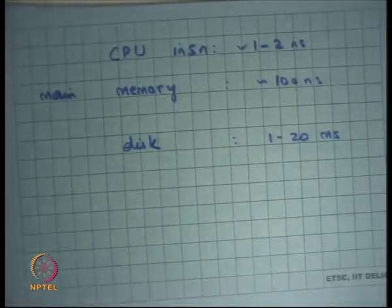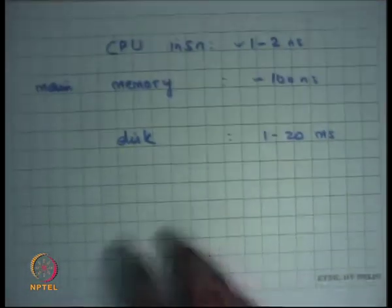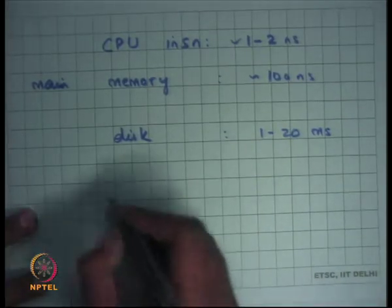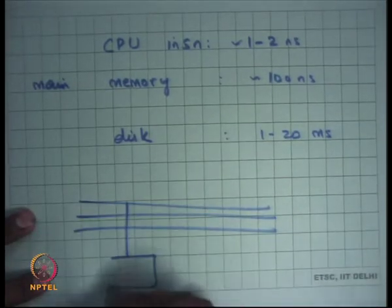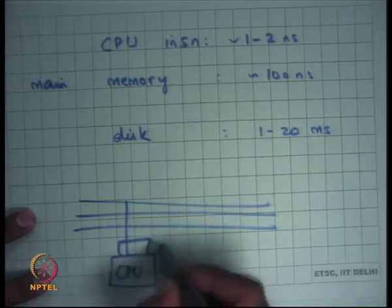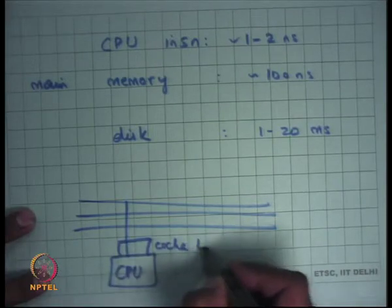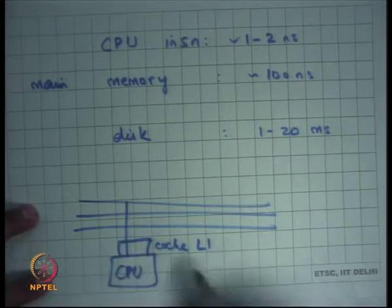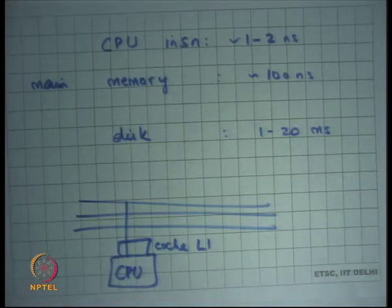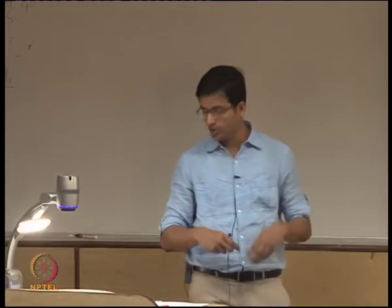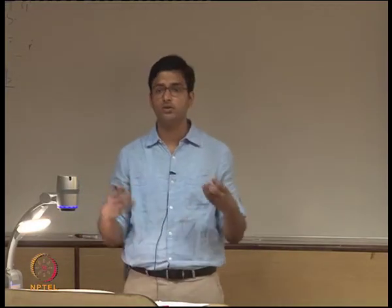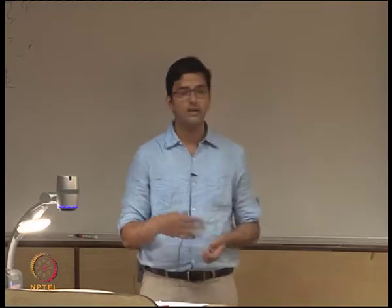Let's look at how slow disk access is. A CPU instruction that executes without going off-chip — within the L1 cache and registers — is an on-chip access. On-chip accesses are really fast. Assuming a 1 to 2 GHz processor, they typically take 1 to 2 nanoseconds to execute a single instruction.